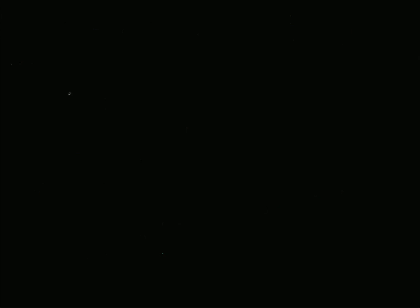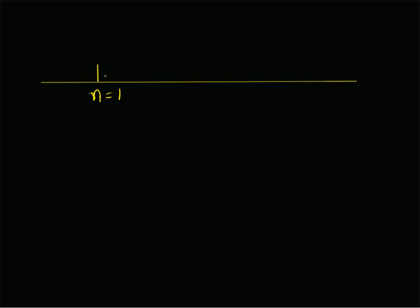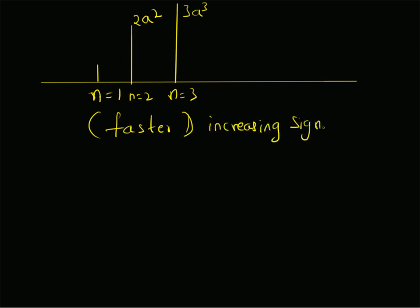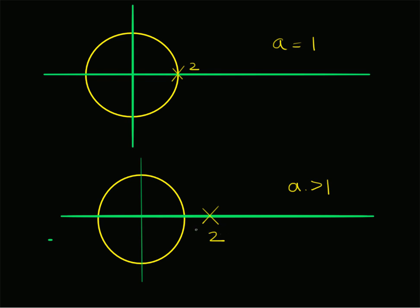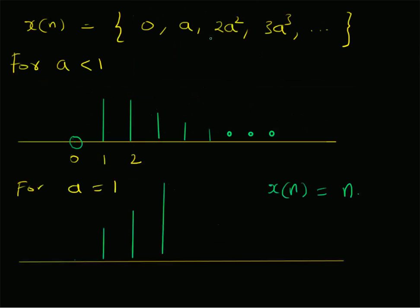For the last case where a > 1, the signal x(n) = n · aⁿ is again increasing but at an even greater rate. At n = 1, the value is a (greater than 1). At n = 2, the value is 2a², which is much greater than a. At n = 3, the value is 3a³, and so on. The values keep increasing at a faster rate, meaning the signal grows non-linearly.